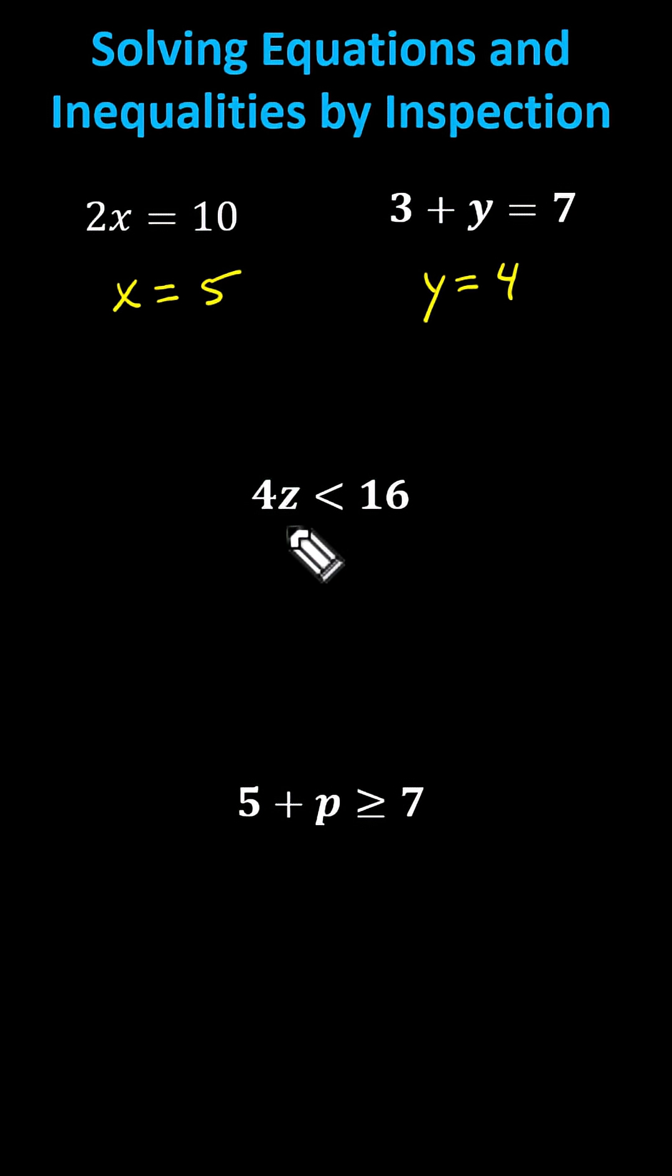Notice if z was 4, we'd have 4 times 4, which equals 16, which is not less than 16. But that means that if z was less than 4, then 4 times the value of z would be less than 16. This indicates the solution is z less than 4.